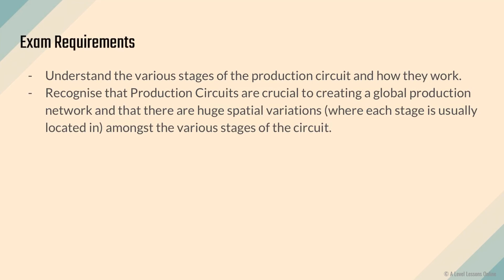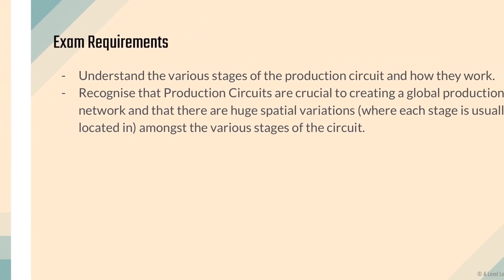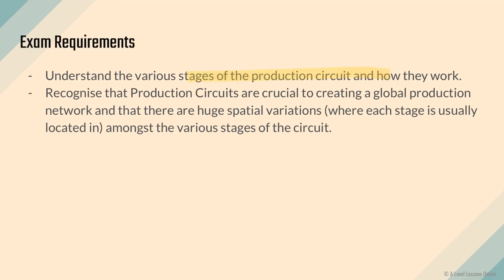In conclusion, a production circuit is basically a supply chain. For exam requirements, you need to understand how the various stages work and recognize that production circuits are crucial to creating a GPN — they effectively are a GPN. There are also huge spatial variations: each stage is usually located in a different area. Higher-skilled areas have control systems and consumer markets, while lower-scale areas handle production plants and sourcing of raw materials.